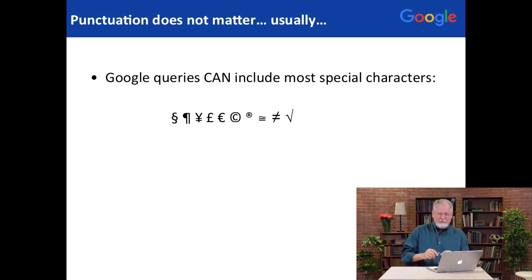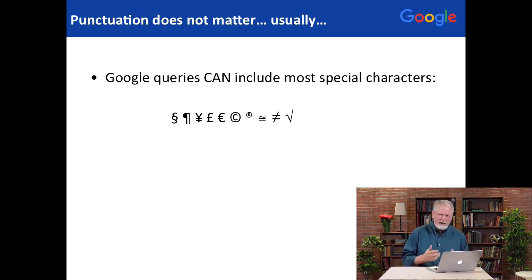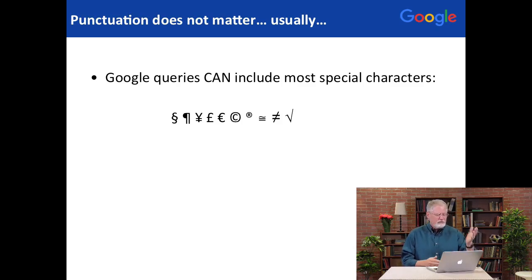We found that people don't do it consistently enough for us to use it as a search signal, so we've just given up on it. On the other hand, special characters do matter. A couple of years ago, lots of special characters were just dropped — they were difficult to index — but we figured out how to do that. Now you can search for different kinds of symbols like the paragraph symbol, the radical sign, the not equal sign, and so on.